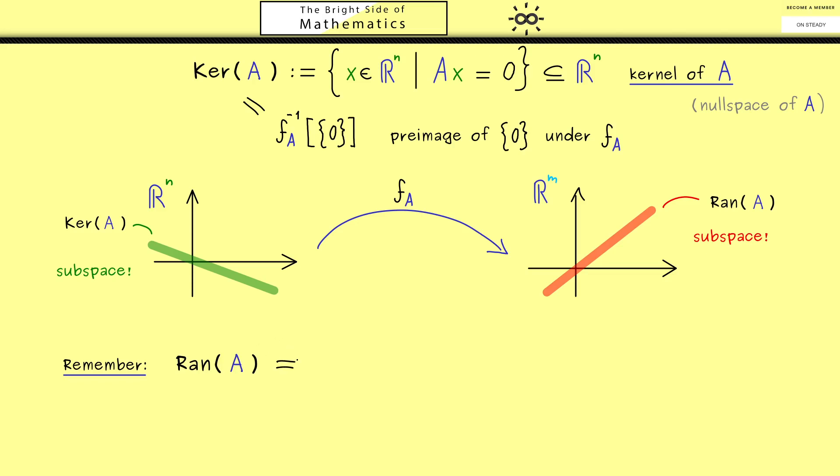The range of A can be written as a span of vectors. Please recall, the notion span we have used to generate subspaces. We are able to generate the subspace range of A by using the columns of the matrix A. We have exactly n columns, so let's call them A_1, A_2 and so on. The span of these column vectors is exactly the range of A. We already know this because we have discussed the column picture of the matrix vector multiplication. There we learned that the outcome of the matrix vector product is exactly a linear combination of the columns. In other words, everything we hit on the right-hand side with the map f_A lies in the span of the columns. Indeed, we hit everything in this span, so we have equality here. This is again something where you can write down the proof for yourself.